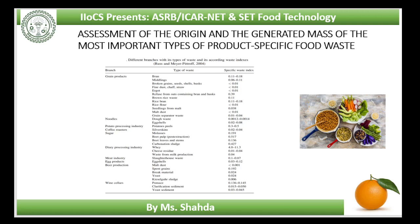Assessment of the origin and generated mass of the most important types of product-specific food waste. Grain products: the most important grains for human consumption are wheat, rice, corn, millet, oats, rye and barley. They are cultivated on approximately 80% of the world's arable land and supply around 50% of the world's population with food.